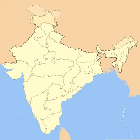The constitution of 1950 distinguished between three main types of states. Part A states, which were the former governor's provinces of British India, were ruled by an elected governor and state legislature. The nine Part A states were Assam, Bihar, Bombay, Madhya Pradesh (formerly Central Provinces and Berar), Madras, Orissa, Punjab (formerly East Punjab), Uttar Pradesh (formerly the United Provinces), and West Bengal.